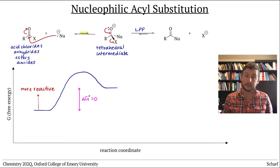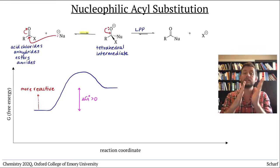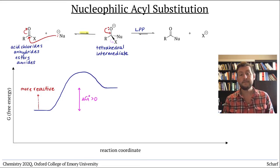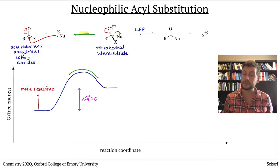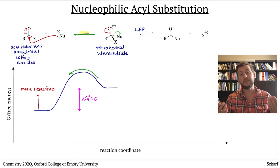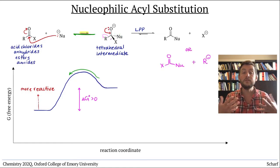The second step, the lone pair push, occurs when a lone pair on the tetrahedral intermediate overlaps with one of the adjacent σ star orbitals, either σ star CR, σ star CNucleophile, or σ star CX, kicking out either R-, NU-, or X- as a leaving group. If NU- is kicked out, the tetrahedral intermediate just reverts back to the starting material. But if R- or X- is kicked out, we make new products.